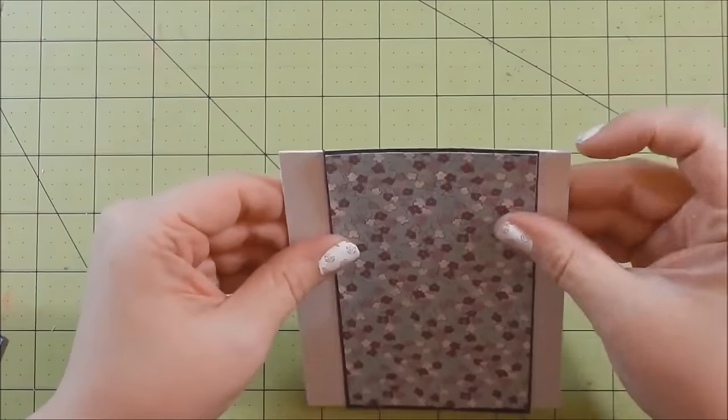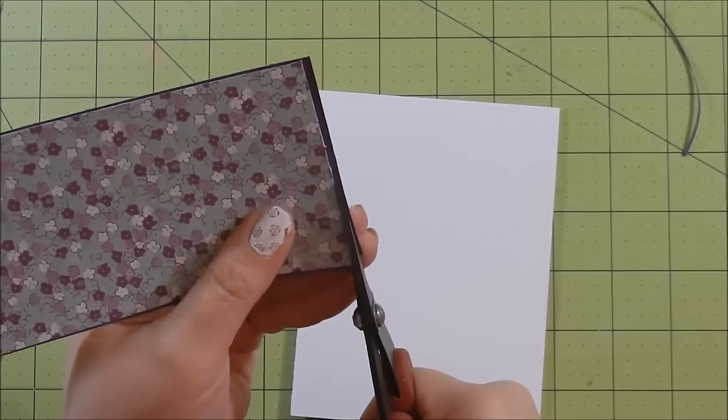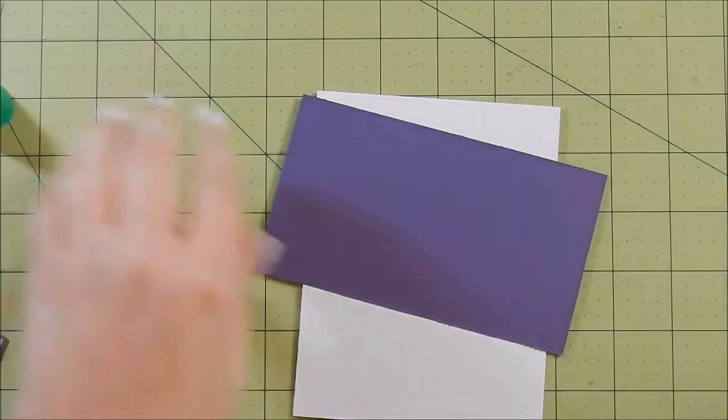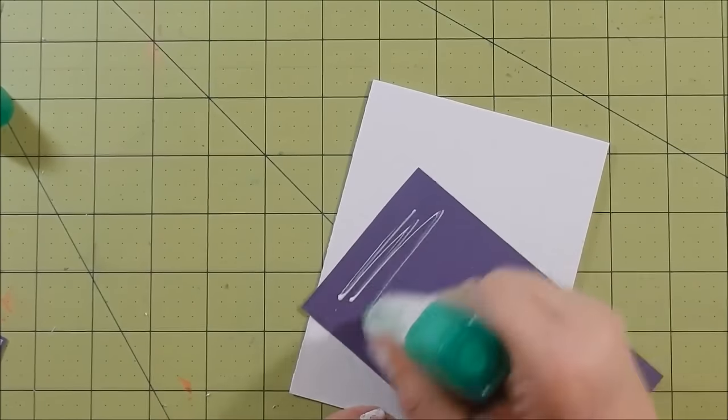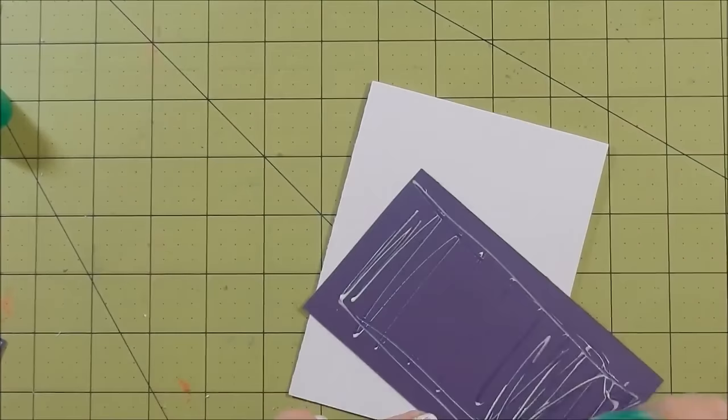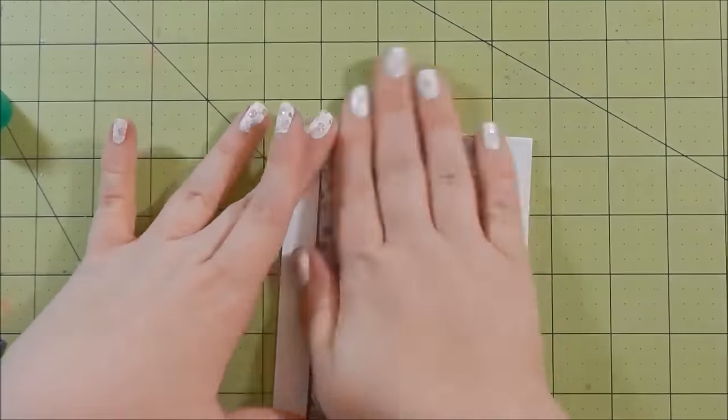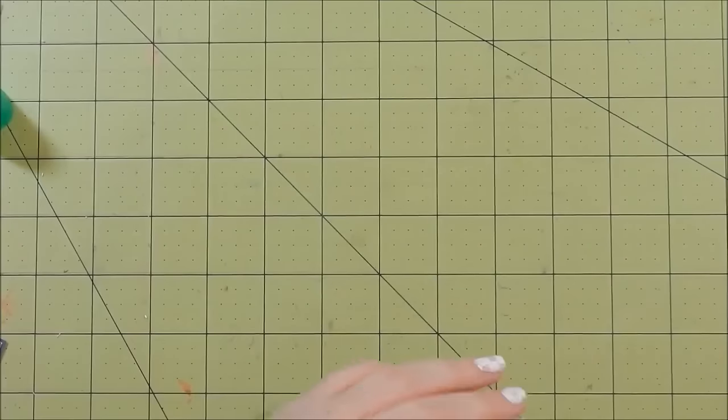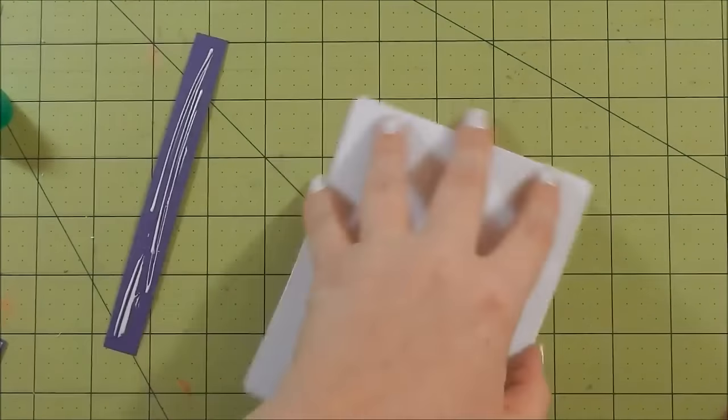Okay, so here I'm adhering my pieces, and on a couple of these like this one I needed to trim off the edges because it was overhanging my card base. And I'm using liquid adhesive, Tombow Mono glue.